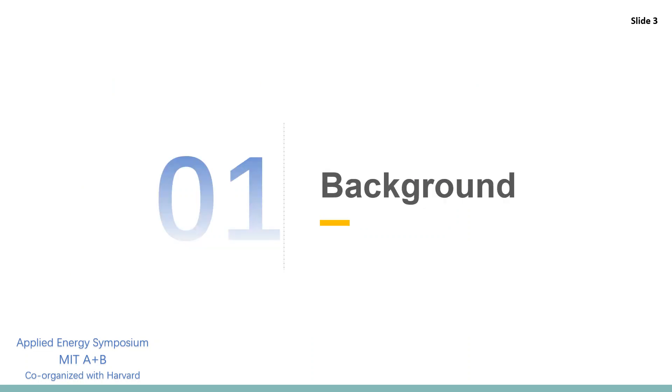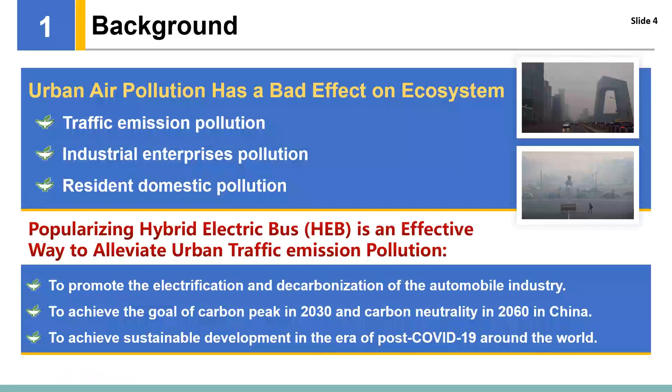Part one is the background. Urban air pollution has a bad effect on the urban ecosystem. To alleviate urban air pollution in the transportation sector, it is necessary to develop new energy public transportation in the city. Hybrid electric buses both reduce emissions and ease the range anxiety. Therefore, popularizing hybrid electric buses is an effective way to alleviate urban traffic emission pollution.